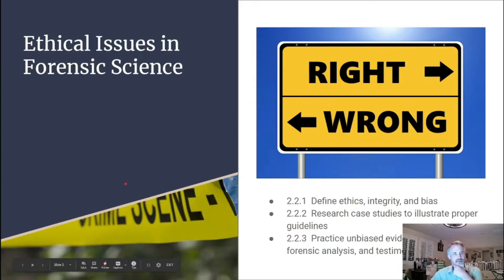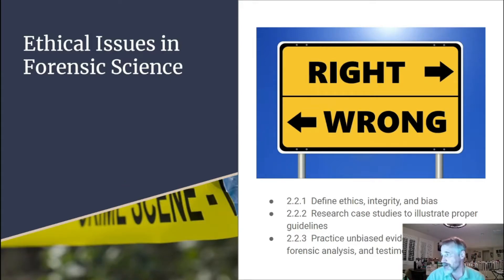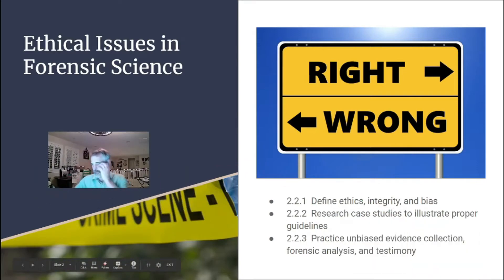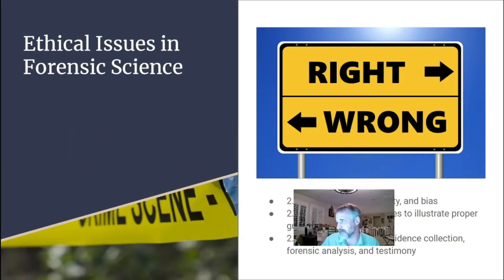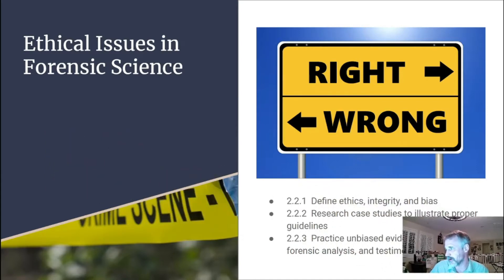This is module five and we're focusing on ethical issues in forensic science. We're talking about the definition of ethics, integrity, and bias. We'll look at research case studies to illustrate proper guidelines — we'll talk about that more in detail next semester as well — and we'll practice on bias, evidence collection, forensic analysis, and testimony throughout the rest of the year.